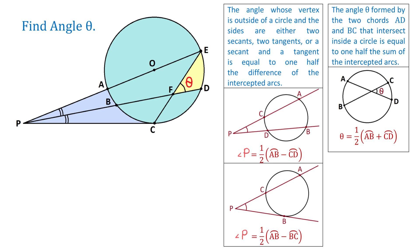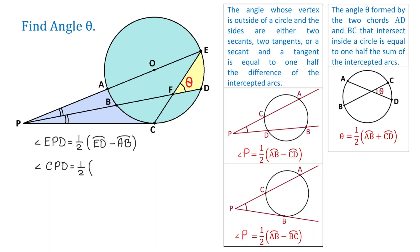Now let's take a look at angle EPD. The intercepted arcs are ED and AB. To find this angle, we need to subtract these two arcs and divide the result by two. So angle EPD equals one-half the difference of arc ED and AB. Now, for angle CPD, the intercepted arcs are DC and BC. So angle CPD equals one-half the difference of DC and BC.